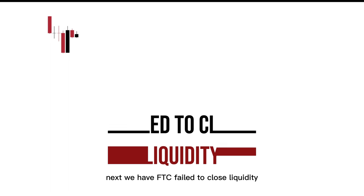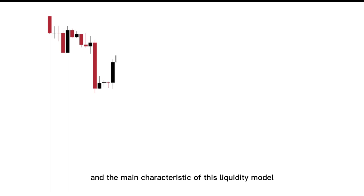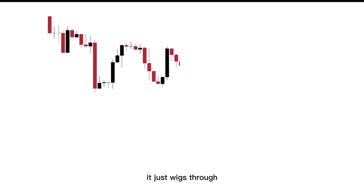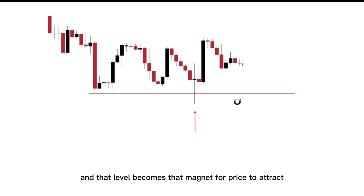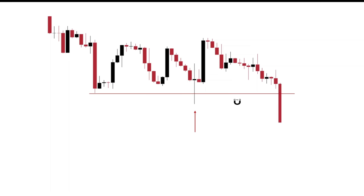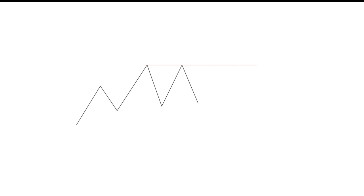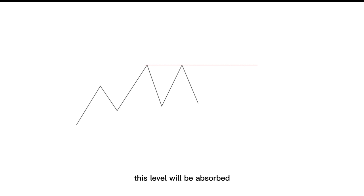Next, we have FTC — failed to close liquidity. The main characteristic of this liquidity model is that the candle never closes below the range; it just wicks through. The candle wicks through and that level becomes a magnet for price to attract. So what is the primary function of liquidity? We know that liquidity will attract price, and in due time this level will be absorbed. But what happens next?